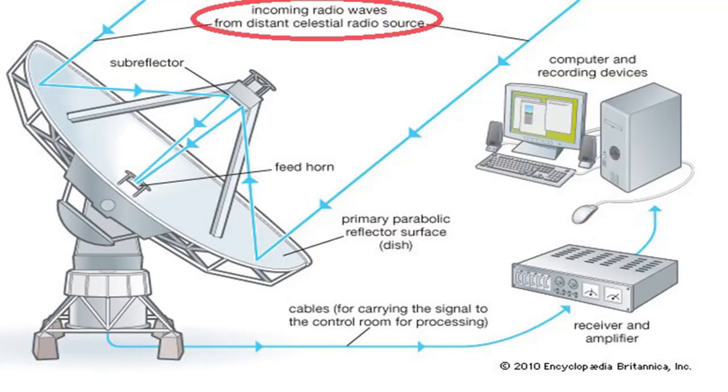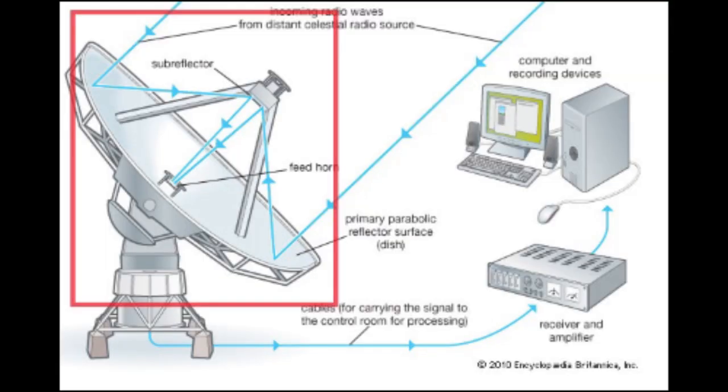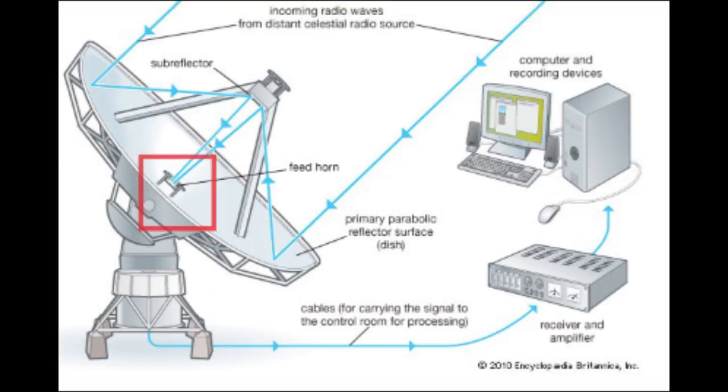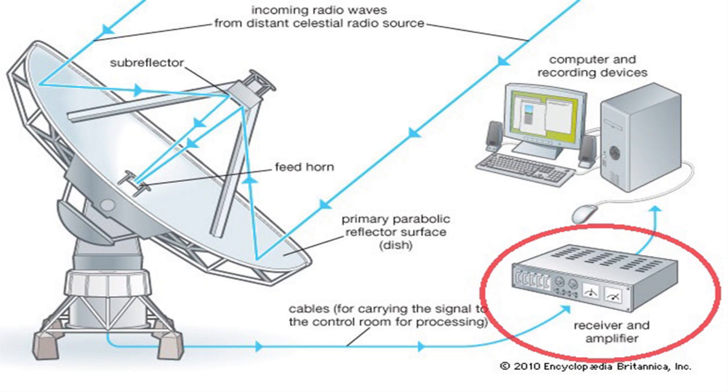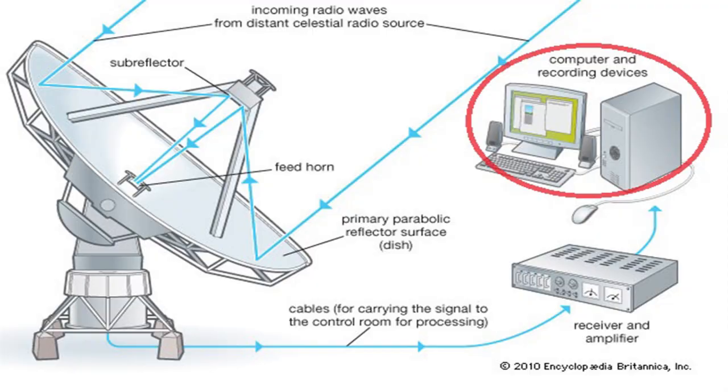Radio waves from distant celestial objects hit the reflector and then go into the feed horn, which is then reflected into the receiver, which is then carried out to the amplifier, which takes the data and stores it in a computer.